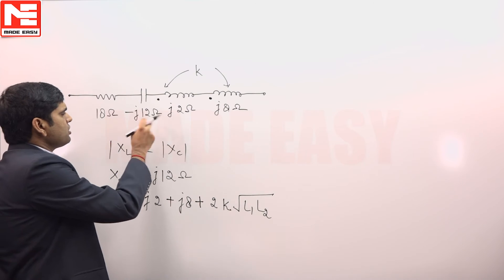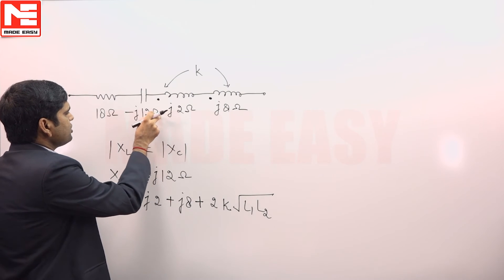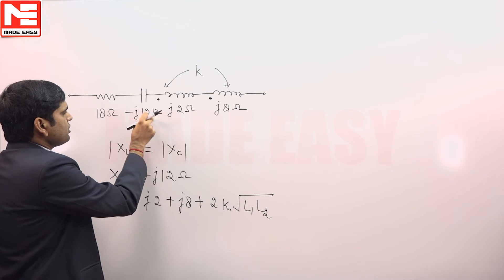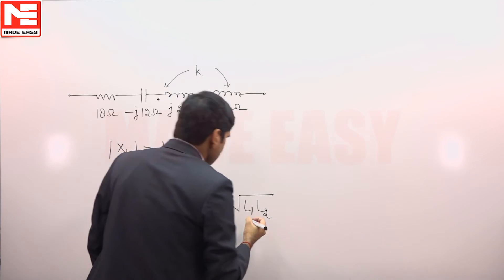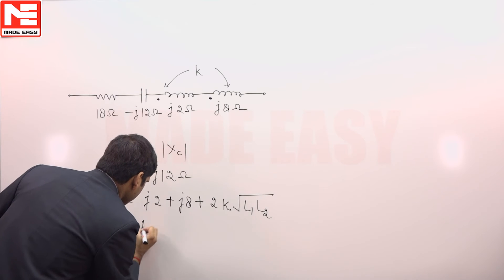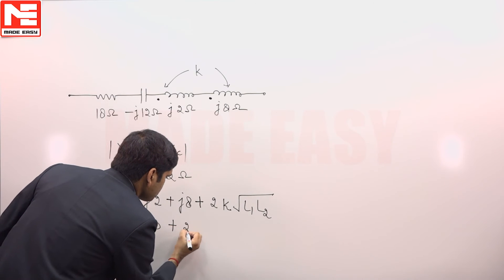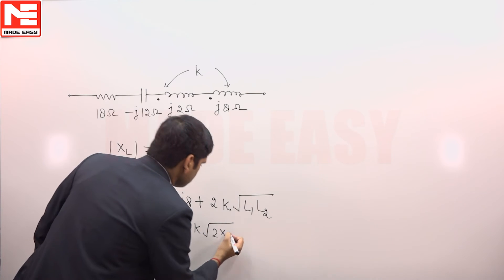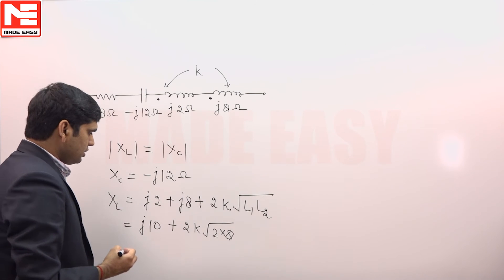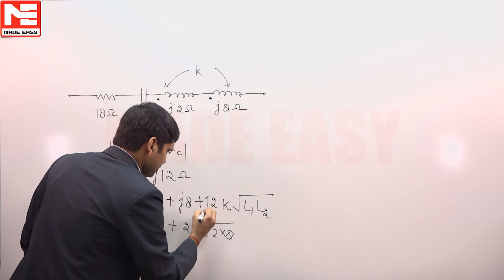So this value is L2 and this is also L2. So j10 plus 2k into √(2·8), and also the j term is j. Equating these two, we have j12 = j10 + j8k.